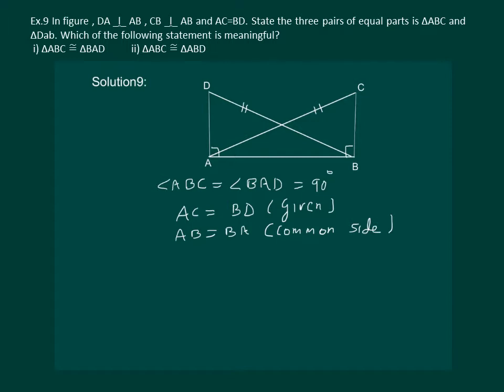From this information we can say that triangle ABC is congruent to triangle BAD by RHS property.